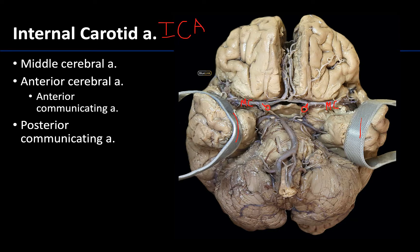The smaller terminal branches are going to be the anterior cerebral arteries, which you can see here. These arteries are going to loop around the optic chiasm and move anterolateral to the longitudinal fissure, continuing up in this region. Additionally, you can see the tiniest of branches between the two anterior cerebrals — this will be the anterior communicating artery. We'll come back to that one in a moment.